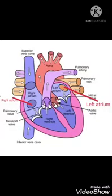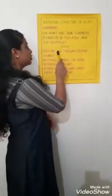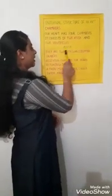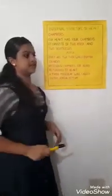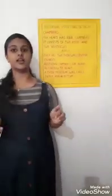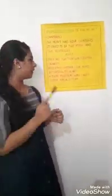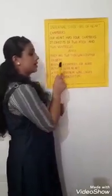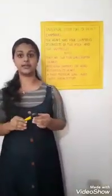The atria are the top portion of the heart. They are two thin-walled upper chambers, and they function as receiving chambers for blood returning into the heart.